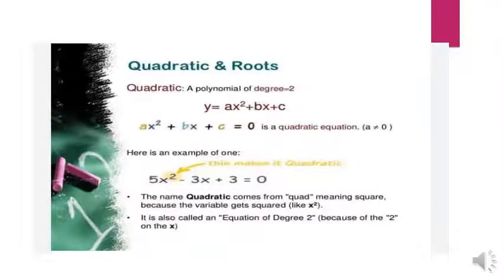Some more things about quadratic polynomials of degree 2. For example, ax² + bx + c = 0 is a quadratic equation where a ≠ 0.